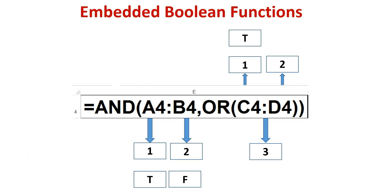The first argument, C4, contains the value true. The second argument, D4, contains the value true. In an OR function, if at least one value is true, the whole function will evaluate to true.